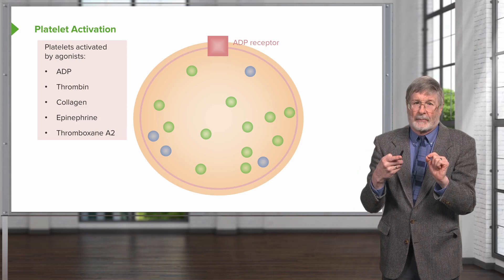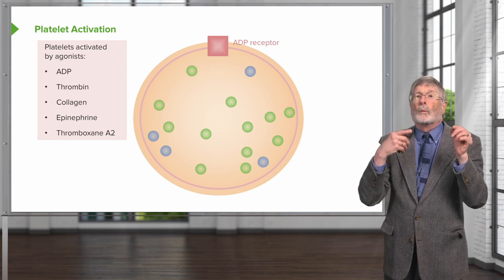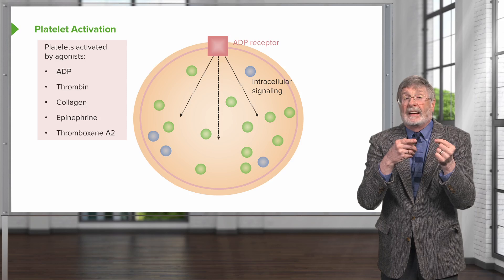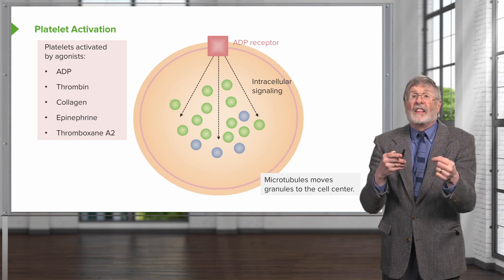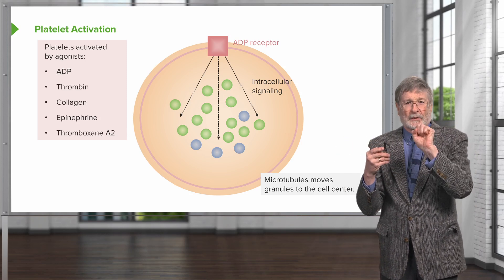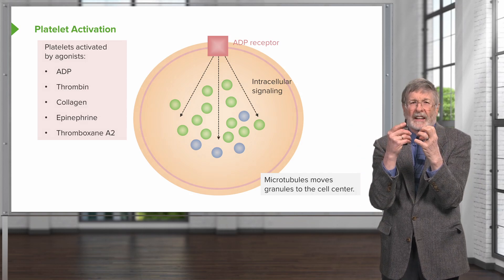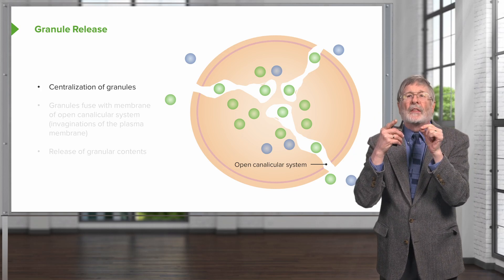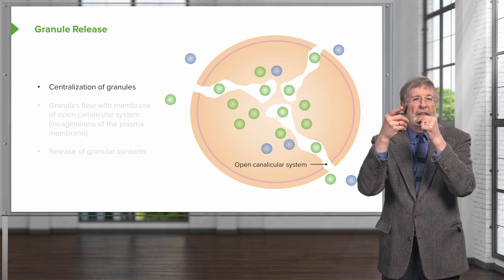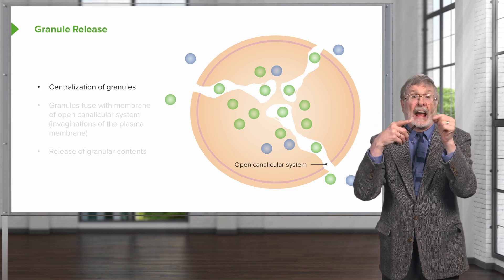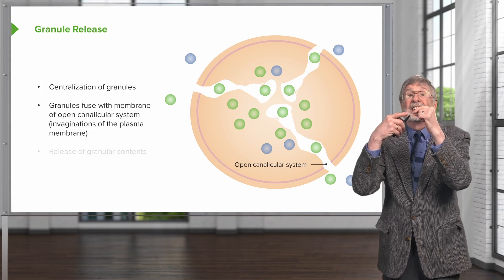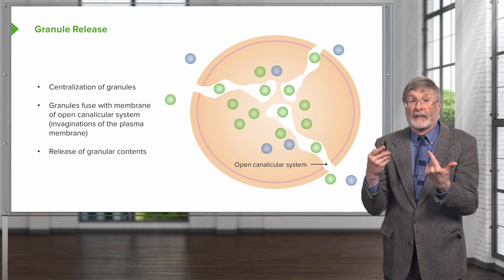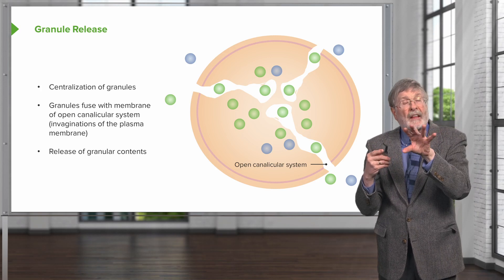Binding ADP to its receptor gives us intracellular signaling. That calls all of the granules — green granules and blue granules — into the middle of the platelet. We have invagination of the platelet membrane so that these granules collected in the middle can fuse, get into the canalicular framework, and are released into the extra-platelet environment. This is part of the shape change that goes on with the platelets.